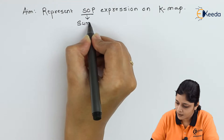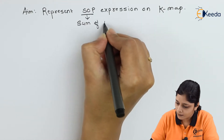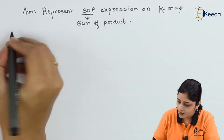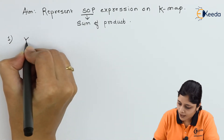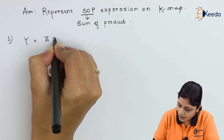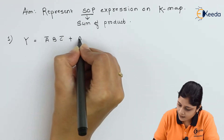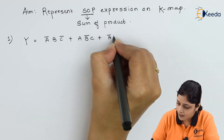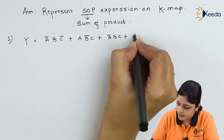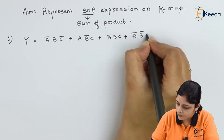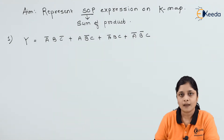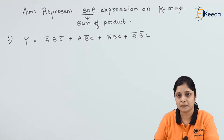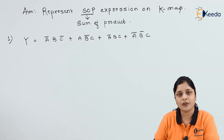Always remember the long form: Sum of Product. The first expression is: y equals ā·b·c̄ plus a·b̄·c plus ā·b·c plus ā·b̄·c. This is the first expression. You have to calculate all the outputs and then map them on the Kmap.